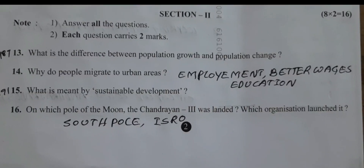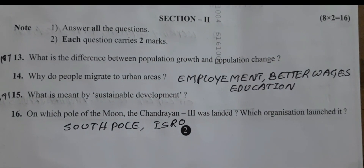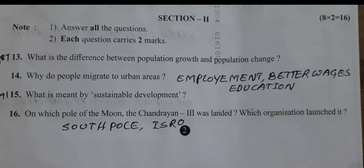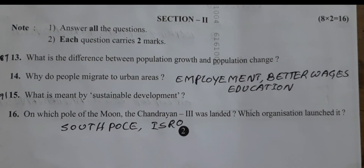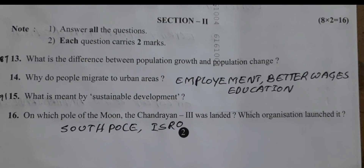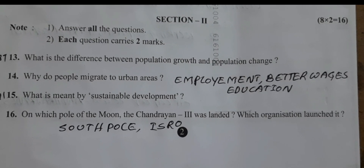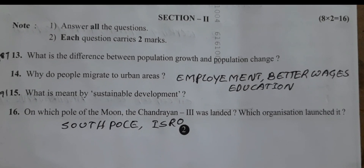Question 7: On which pole of the moon did Chandrayaan 3 land? It landed on the South Pole. Which organization launched it? ISRO.